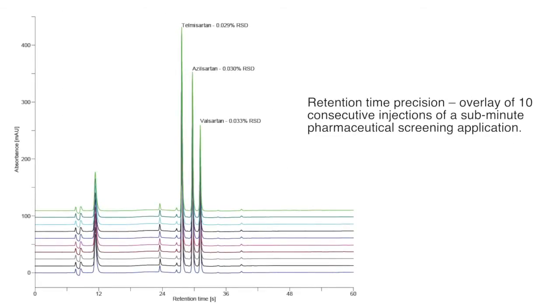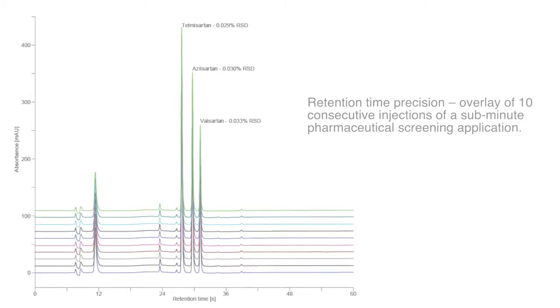That allows customers to use smaller particles and they can use that in two ways. They can either use relatively short columns and do extremely fast analysis or relatively long columns and do high resolution analysis or some kind of blend in between.